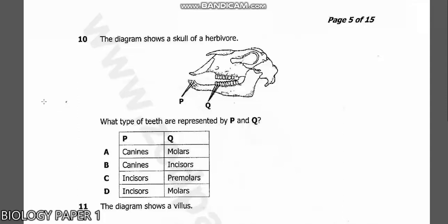Question 10: The diagram shows a skull of a herbivore. What type of teeth are represented by P and Q? This is a herbivore - an animal or organism that feeds on grass only. From the look of things you can tell this is for a goat. P, the teeth just in front of the jaw here, these are the canines. These ones which are here, those are what we call the incisors.